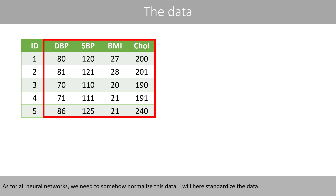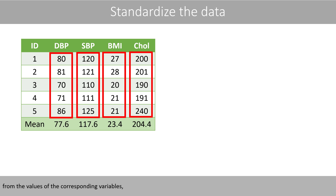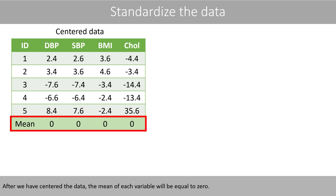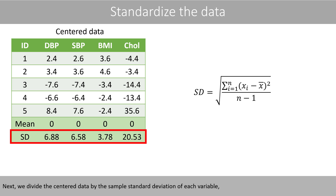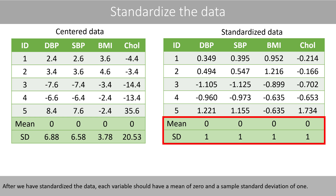As for all neural networks, we need to somehow normalize this data. I will here standardize the data, by first subtracting the means from the values of the corresponding variables, so that we get the centered values. After we have centered the data, the mean of each variable will be equal to zero. Next, we divide the centered data by the sample standard deviation of each variable, so that we get the following values. After we have standardized the data, each variable should have a mean of zero and a sample standard deviation of one.